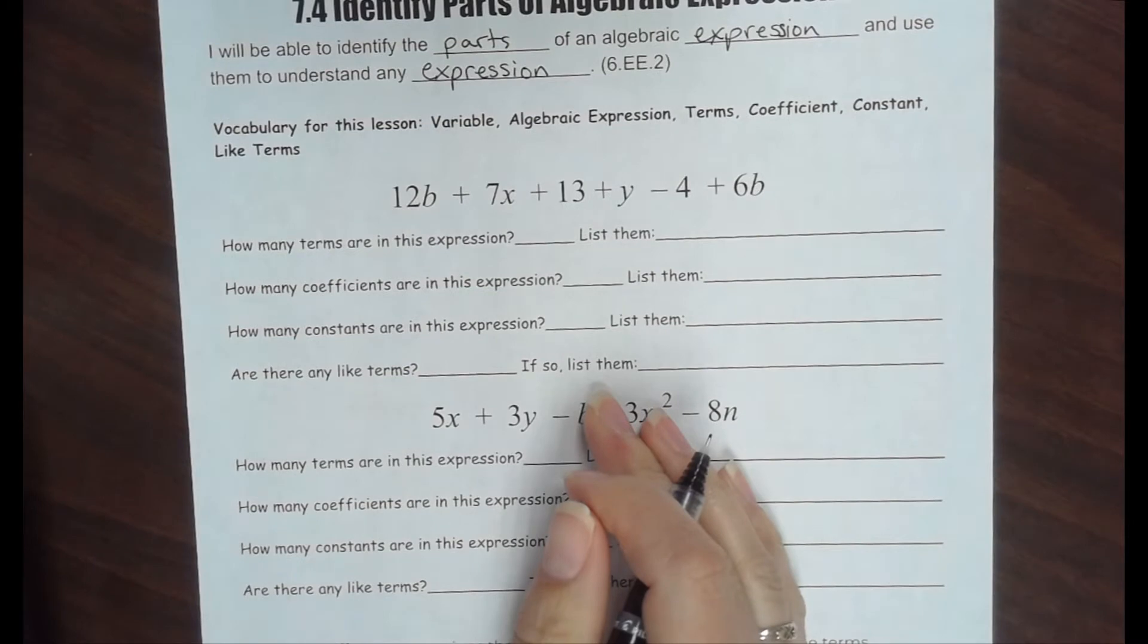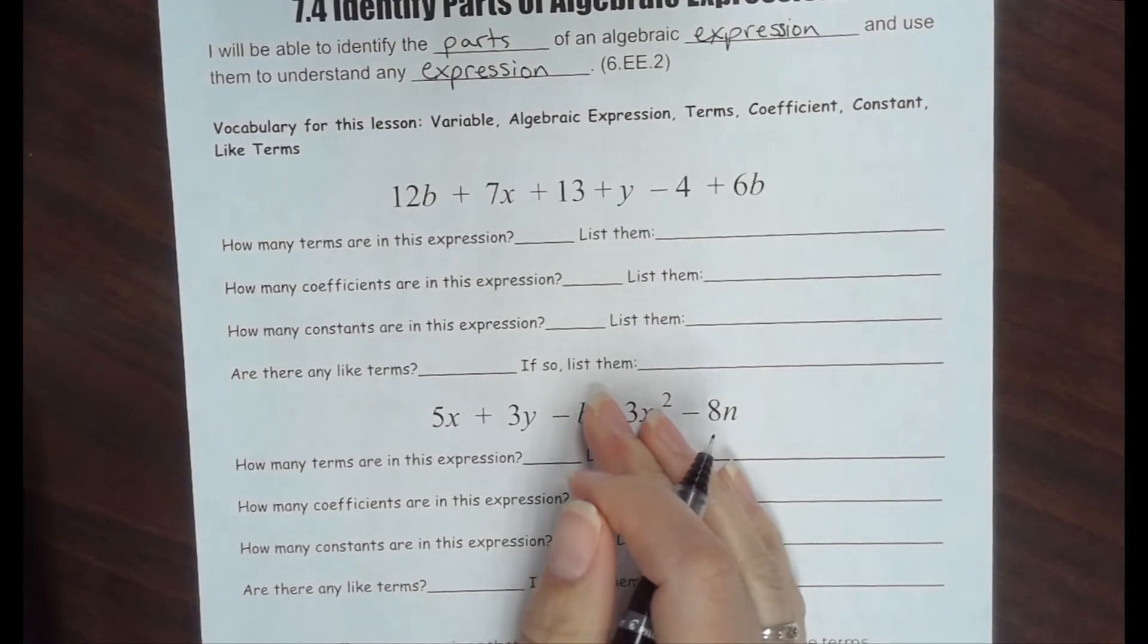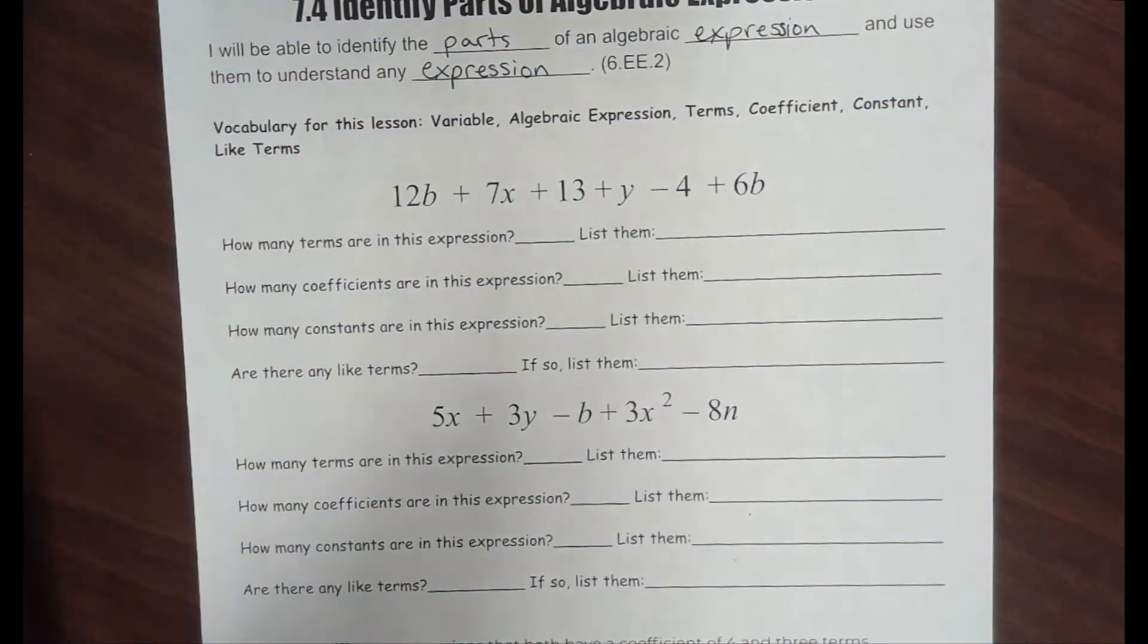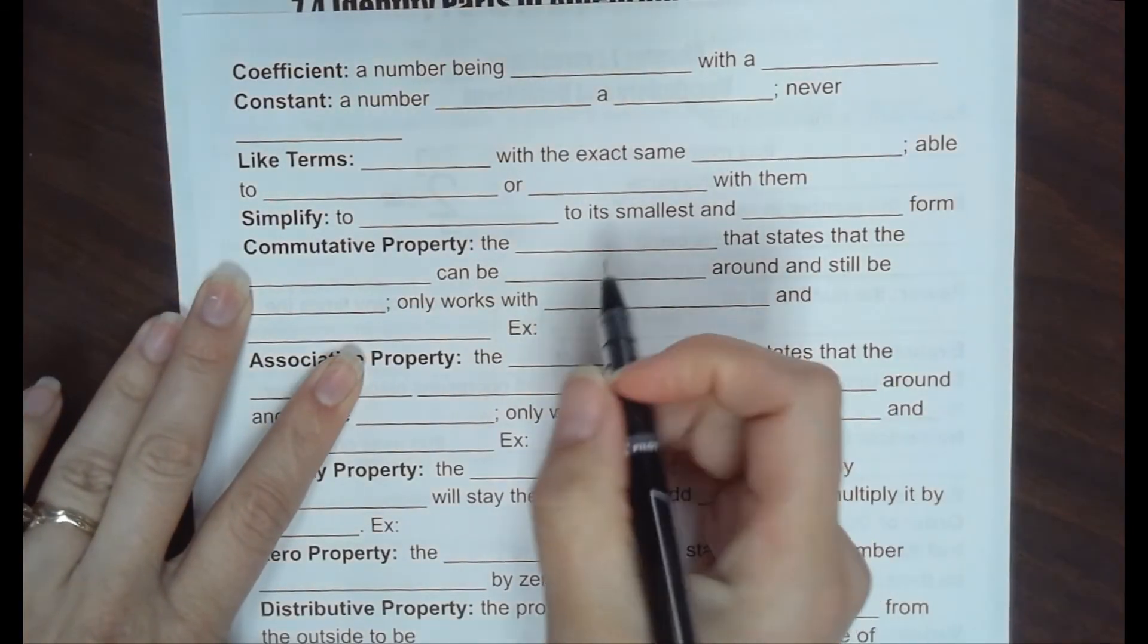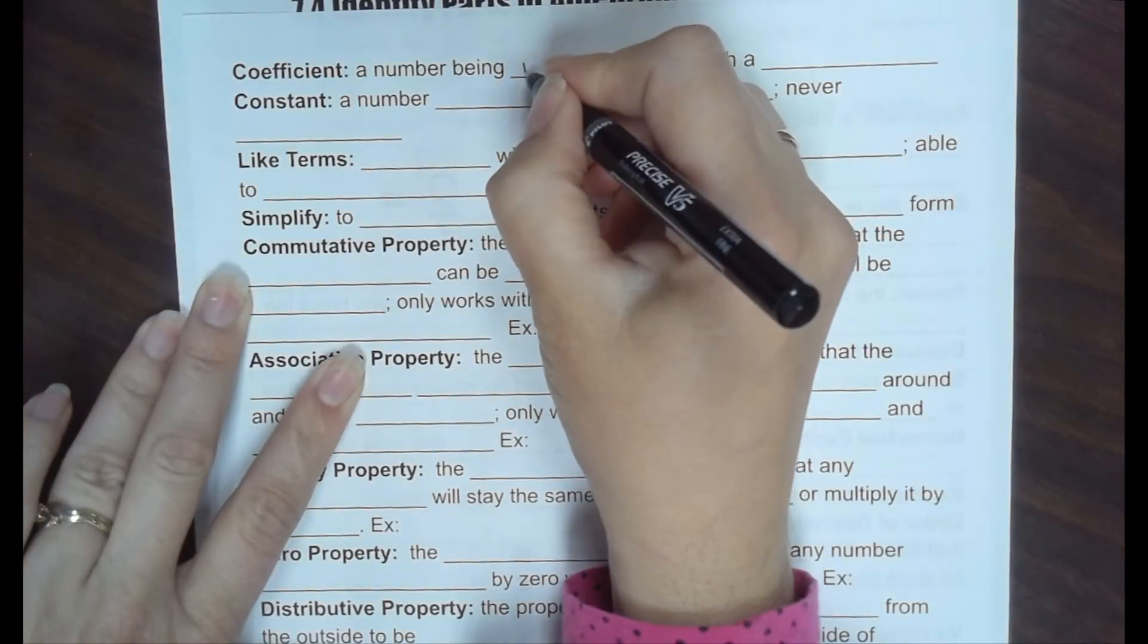The next vocabulary word we're going to talk about are coefficients. That will be at the top of the next page. A coefficient is a number being multiplied to a variable.